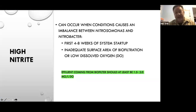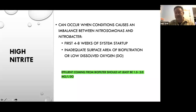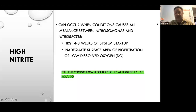High nitrite — not nitrate — is very common, especially in systems that are not balanced correctly or during startup. We mostly see this in startup systems and in biofilters sized on total surface area rather than usable surface area, or systems with low oxygen. Effluent leaving your biofilter should have at least 1.5 to 2.0 mg/L of dissolved oxygen — I prefer much higher, but that is the minimum.